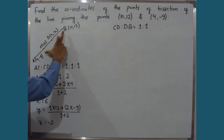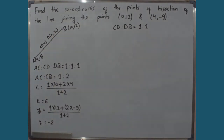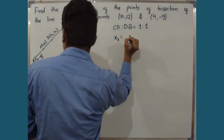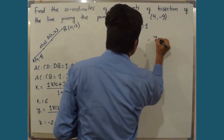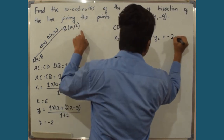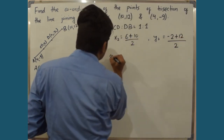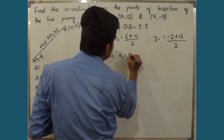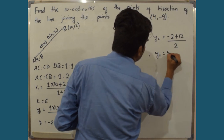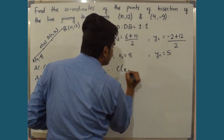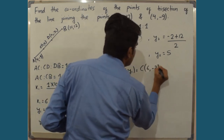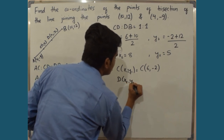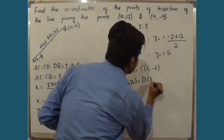D is the midpoint of CB. So X2 = (6 + 10) / 2 and Y2 = (−2 + 12) / 2. This gives 16 / 2 = 8 and 10 / 2 = 5. Therefore, C(X1, Y1) = C(6, −2) and D(X2, Y2) = D(8, 5).